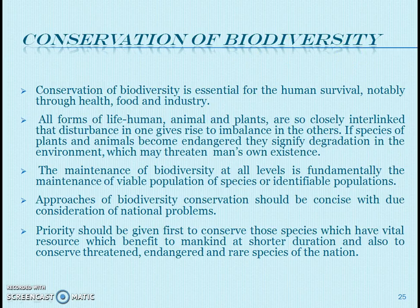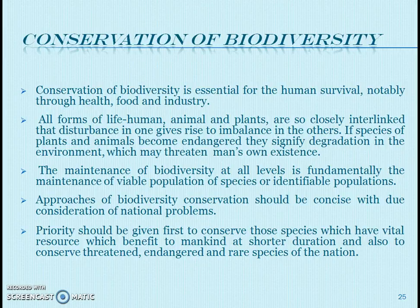Conservation of biodiversity is essential for human survival. There are two types of biodiversity conservation. In situ conservation means conserving species in their own habitat — for example, national parks, sanctuaries, and biosphere reserves. Ex situ conservation means conserving species or parts of species outside their own habitat — for example, gene banks where seeds and pollen grains are stored.